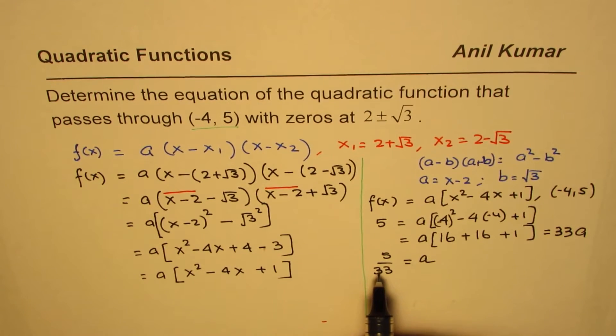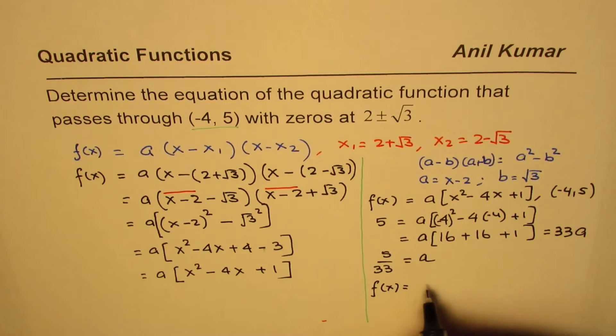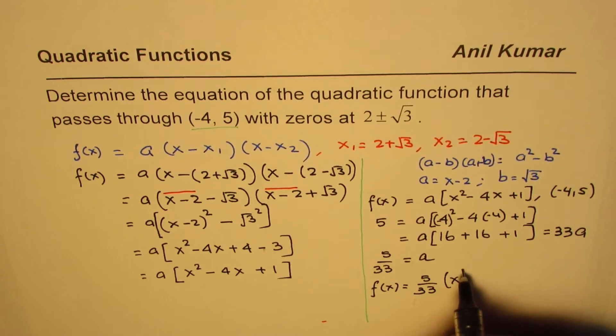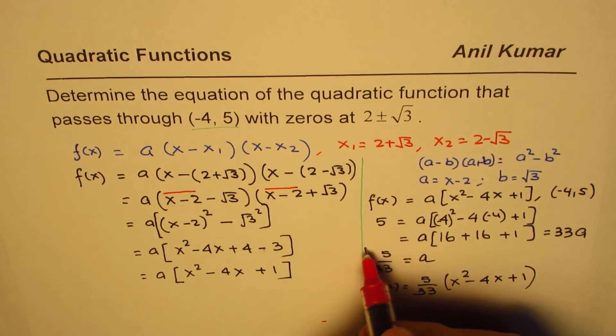Since we know the value of a now, we can write the function as f(x) = (5/33)(x² - 4x + 1). You get an idea, right? So that is how you can find the equation.